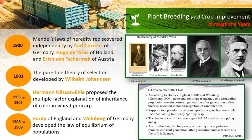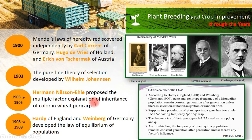This rediscovery laid the foundation for modern genetics. In 1903, Johannsen developed the pure line theory of selection. Herman Nelson also proposed the multi-factor explanation of inheritance of color in wheat, which occurred between 1903 and 1905.